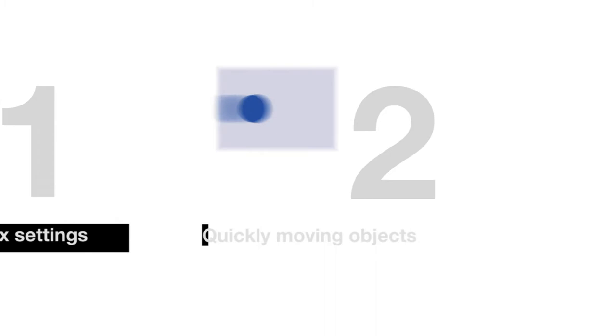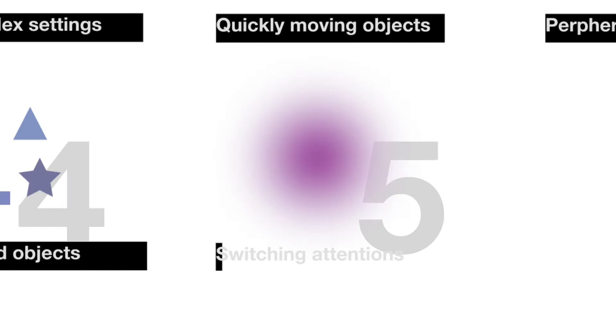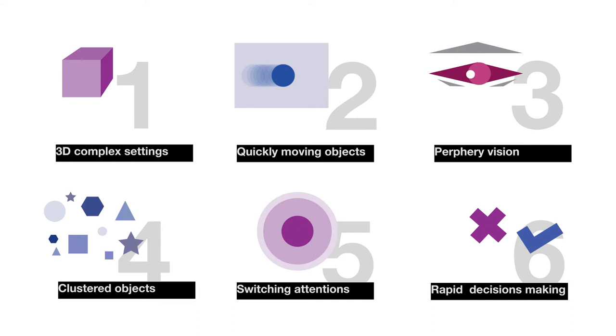In the cognitive domain, scientists are particularly interested in types of games with features such as complex 3D settings, quickly moving targets, and that require the player to make rapid but accurate decisions.